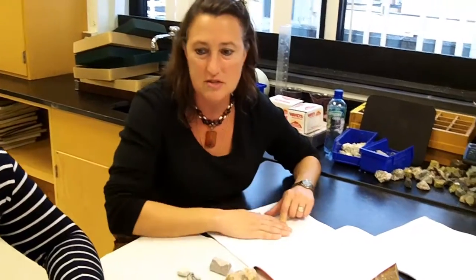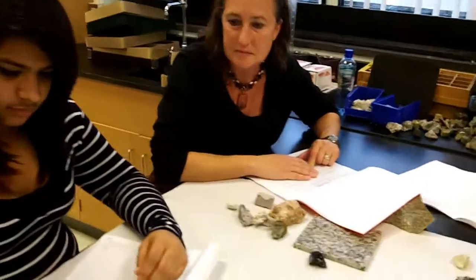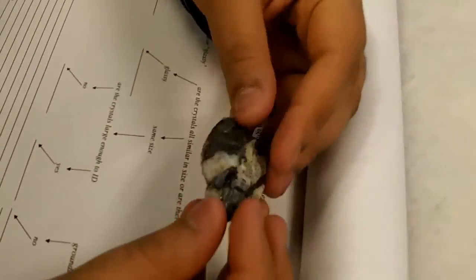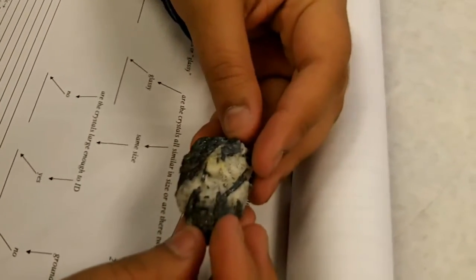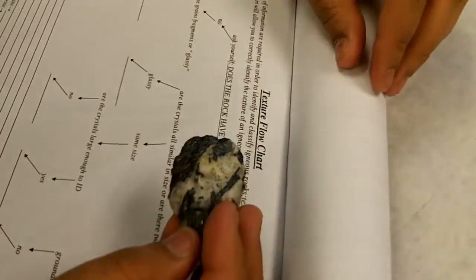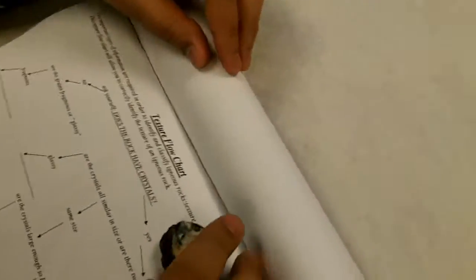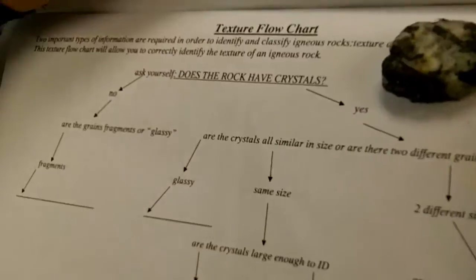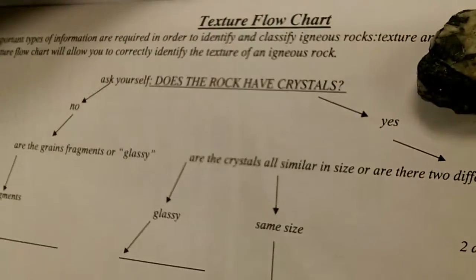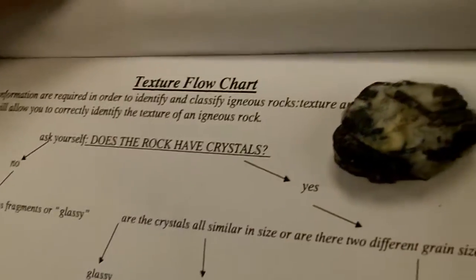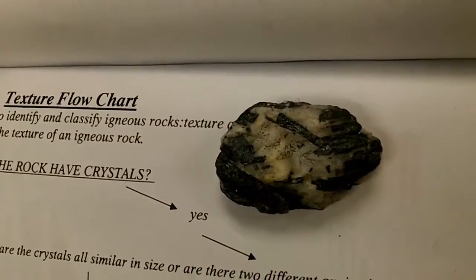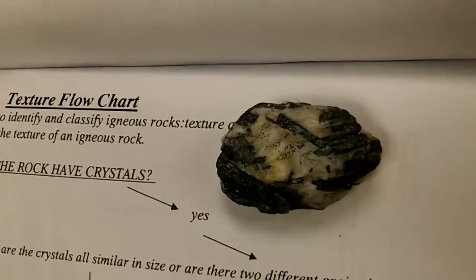Second rock. So where do we start? We ask: does it have crystals or not? Can you see crystals on that rock? Some are uncertain — it might be crystalline when you move it.